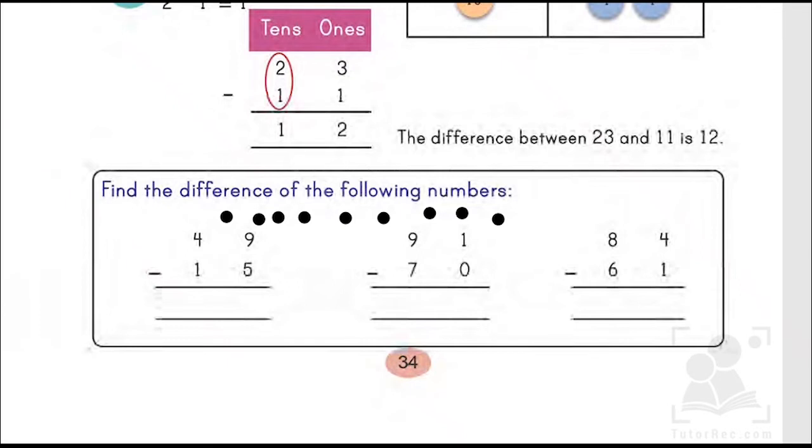How many? 5. Let's count them: 1, 2, 3, 4, 5. So 5 I have cut. The remaining ones are 1, 2, 3, 4. Four is the difference when you subtract 5 from 9.